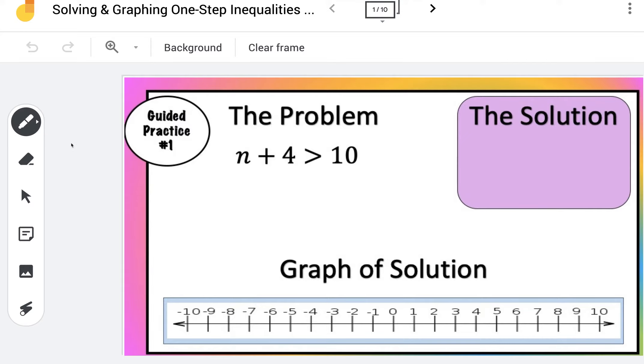Remember, this is a number plus 4, so you always want to do the opposite or the inverse. We're going to subtract 4 from both sides, so take away 4 and take away 4. That will give us the solution of n is greater than, well, 10 take away 4 is 6.